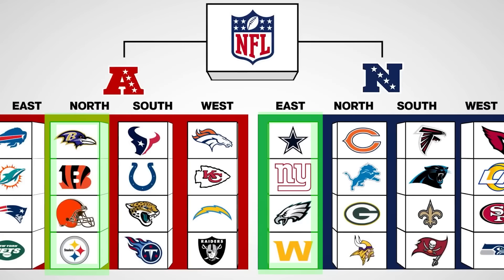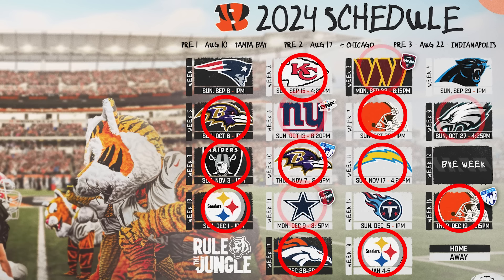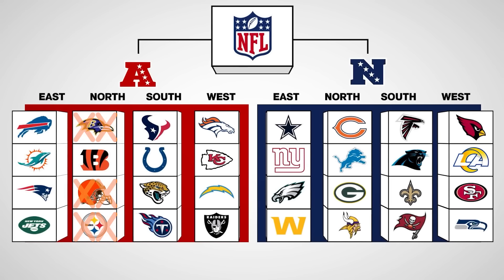The next four games are similar — you play each team from yet another division, but this time it's against a division from outside your conference. For example, the AFC North faces off against the NFC East. That puts us at 14 out of 17 games.